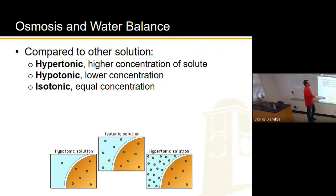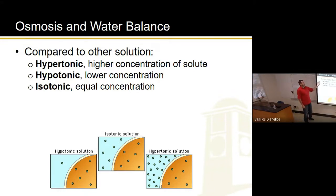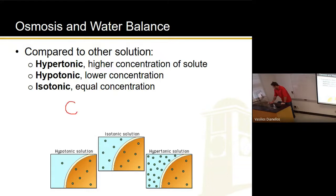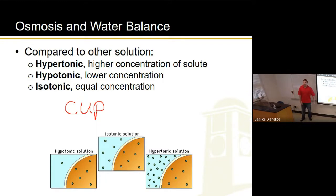Here are those words again now in writing. We're comparing them to another solution — it's all relative. Something is hypertonic if it has a higher concentration, hypotonic if it has a lower concentration, and isotonic if it has the same. More than likely you're not going to be tested on the definitions themselves, but there will be questions where those words are used — like: this thing's hypotonic and that thing's hypertonic; they're both put in water — which one's going to be bigger after 15 minutes? You need to understand those terms.